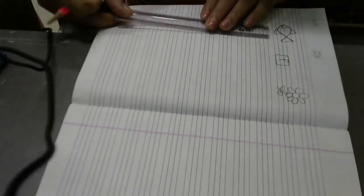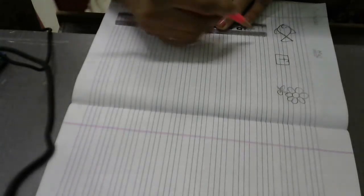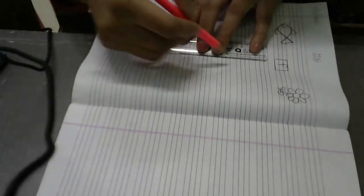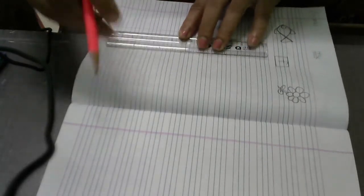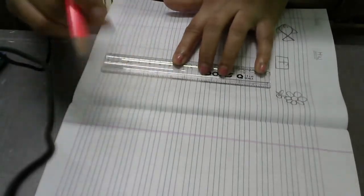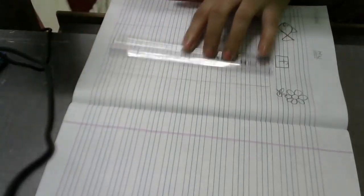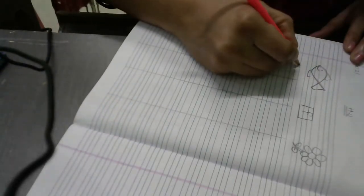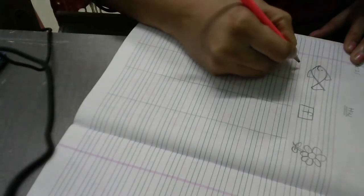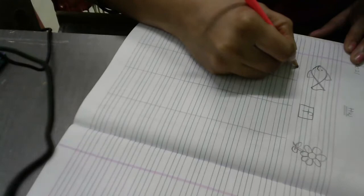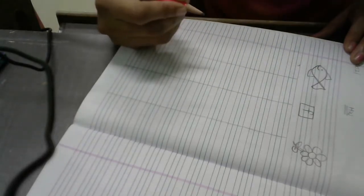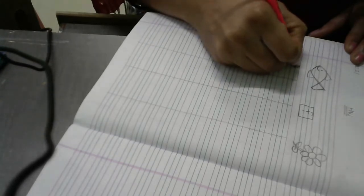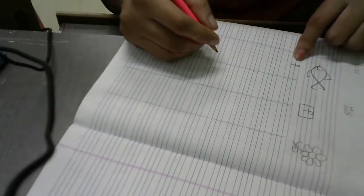Now draw four columns and we will write letter F. Keep your pencil in between the pink and blue lines and draw a small curve first like this. A small curve and a standing line till third line. Then a sleeping line should come on second blue line.